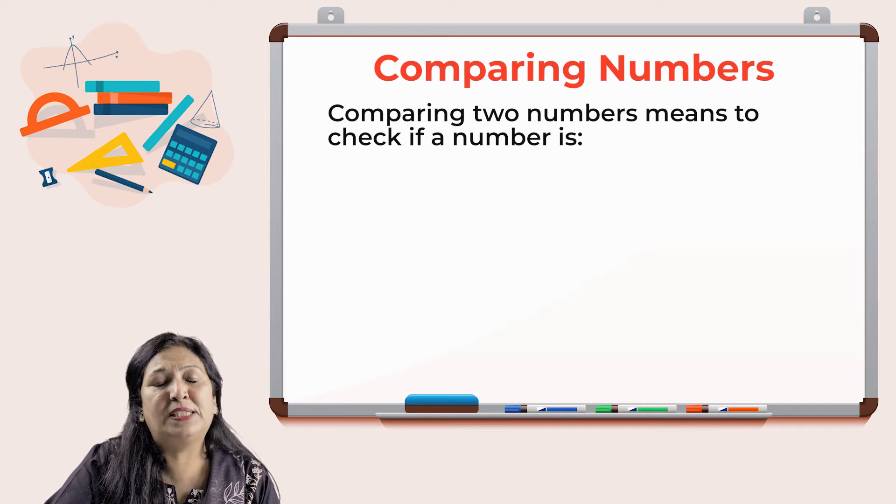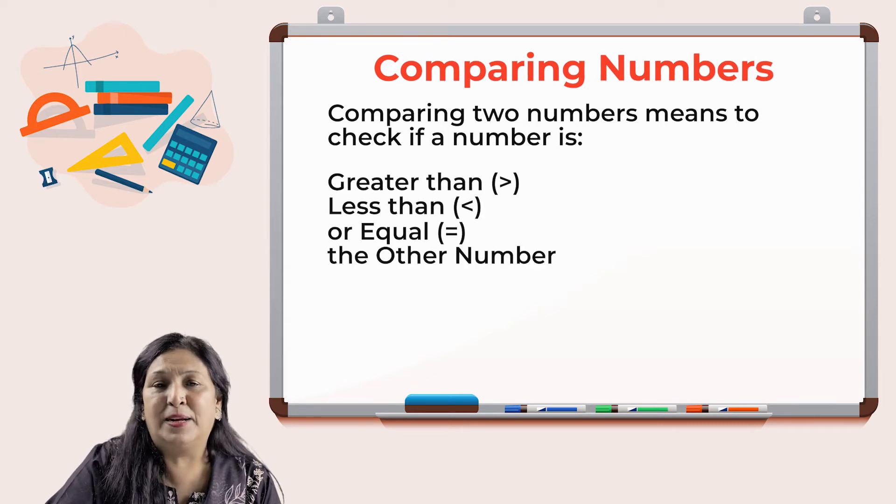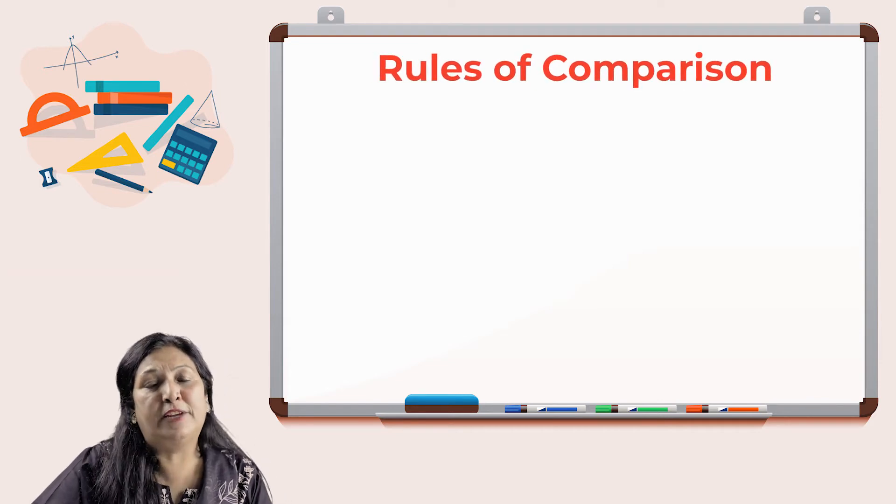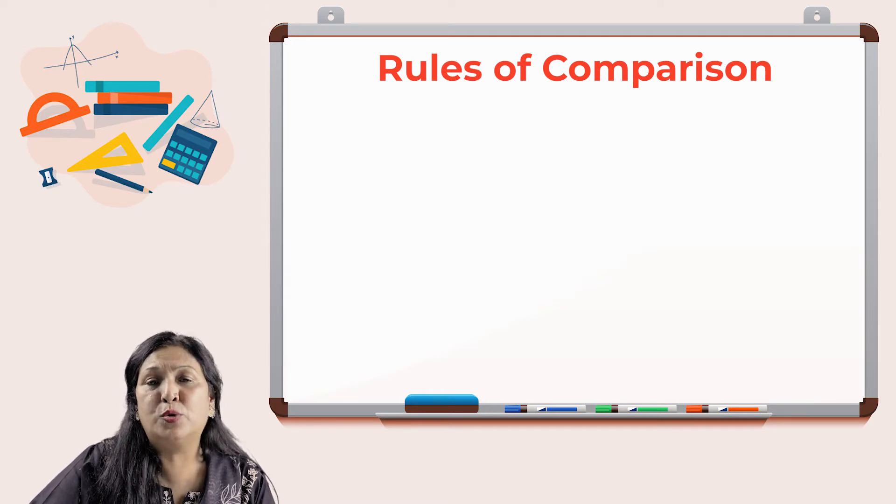Comparing two numbers means to check if the number is greater than, less than, or equal to the other number. Now there are certain rules that we follow while comparing a set of numbers. Let's begin by comparing two numbers at a time.